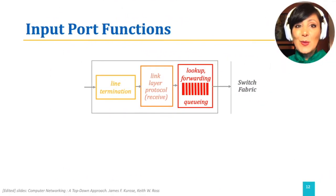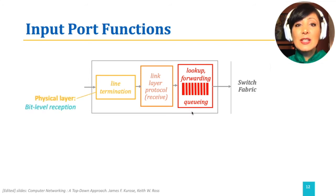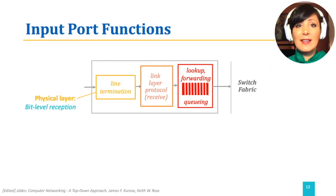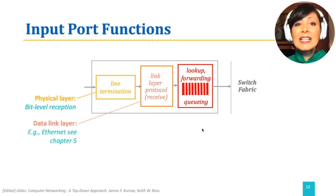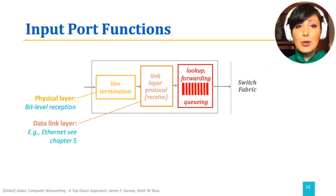Taking a closer look at the input port functions: line termination is the section responsible for physical layer termination of the signal for receiving the bits on the line. The next step is link layer termination, which runs the data link layer protocol to talk to the other side of the incoming link.